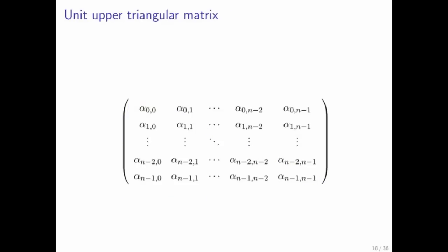And then there's a unit upper triangular matrix. What's a unit upper triangular matrix? The unit upper triangular matrix has ones on the diagonal. So all of the entries on the diagonal are equal to one, like the identity matrix. And all of the entries below the diagonal are equal to zero. And we put no restrictions on the entries above the diagonal.